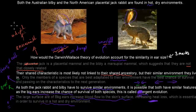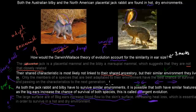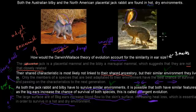You get one mark for mentioning that they're not related and that their big ears are not related to their shared ancestry, but to the similar environments they live in. You also get a mark for mentioning the theory of evolution and linking that to convergent evolution. And you get a mark for saying that big ears help with heat loss, and they need heat loss because they live in a hot environment. That would be three marks out of three.